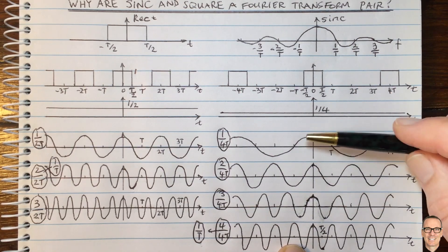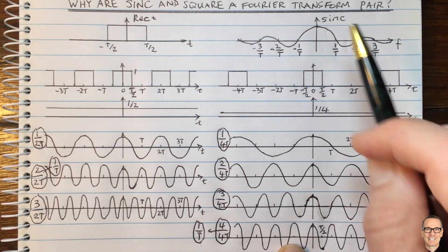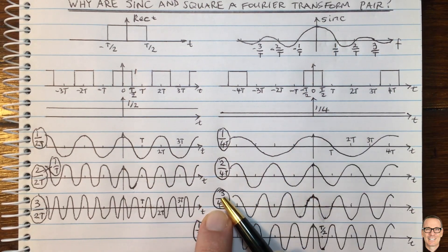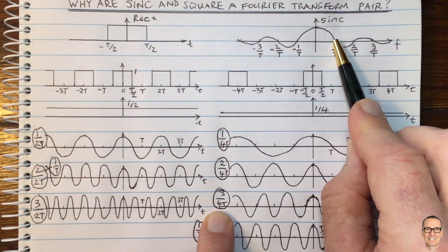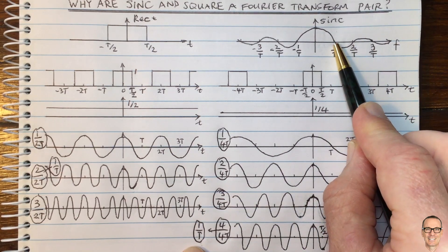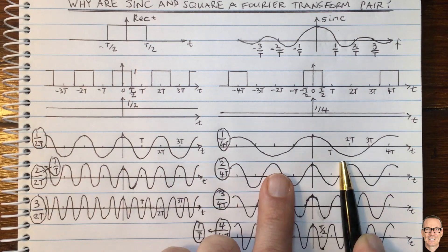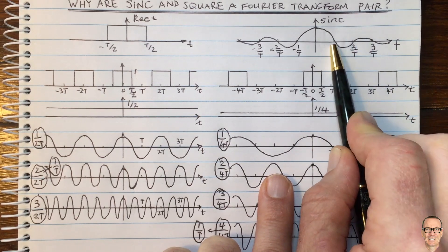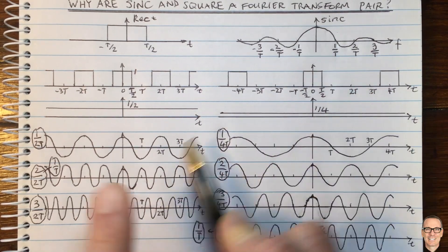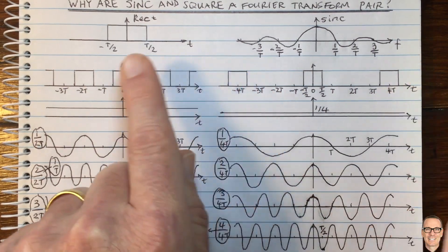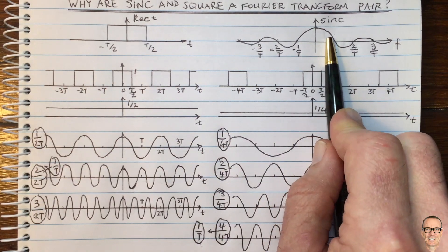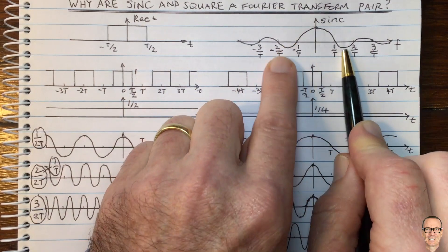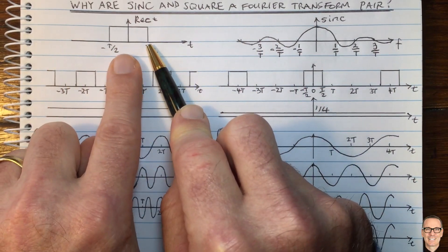Now we can see that with a 4T period, we have components at 1/(4T), 2/(4T), and 3/(4T) — all positive in the sinc — and then zero at 1/T. More components are filling in before the zero crossing, but that zero crossing remains at 1/T. If we make this period even bigger, there will be even more filling in. And if we make the period infinite — giving us the rect function exactly — we'd have an infinite number of components, filling in to give exactly the continuous sinc function.